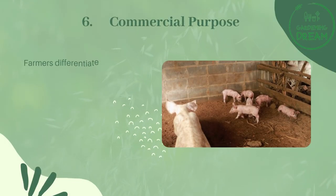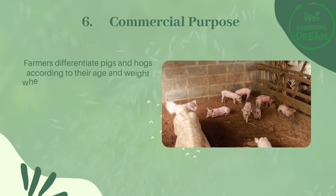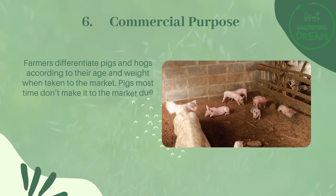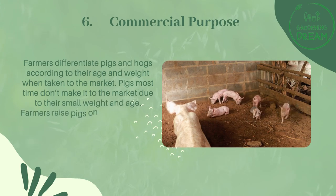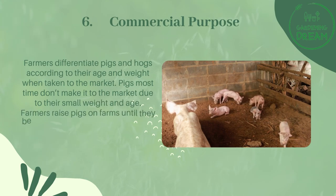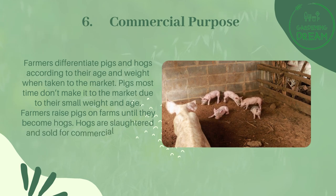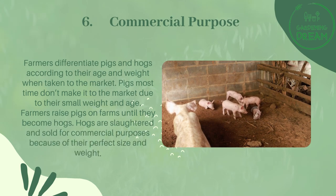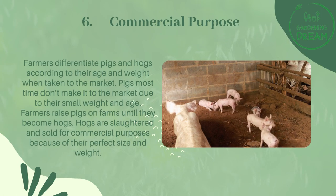For commercial purposes, farmers differentiate pigs and hogs according to their age and weight. Pigs most often don't make it to the market due to their small weight and age — farmers raise pigs on farms until they become hogs. Hogs are slaughtered and sold for commercial purposes because of their ideal size and weight.